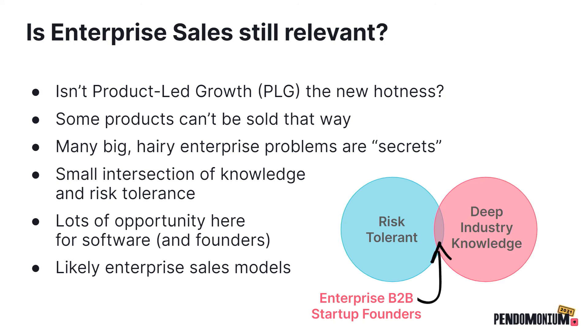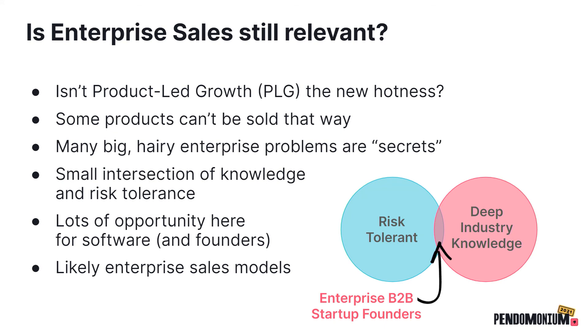If you've read Peter Thiel's book Zero to One, he talks about the concept of secrets — a truth that few other people know. The reason we don't see more companies focusing on enterprise sales and big hairy enterprise problems is because there's a tiny intersection on that Venn diagram: a recent college grad probably won't found an aircraft maintenance platform because they lack industry experience, and a 30-year veteran VP of maintenance at Southwest Airlines probably won't found a software startup because they lack the risk tolerance. There's a lot of opportunity for founders here.